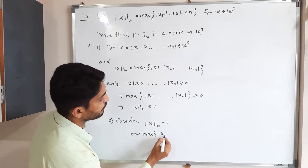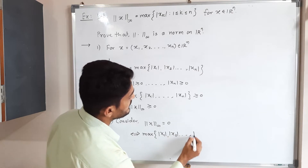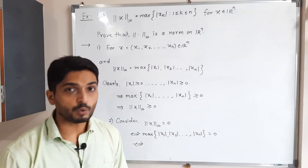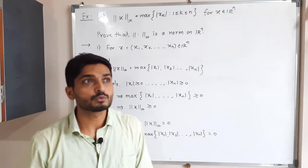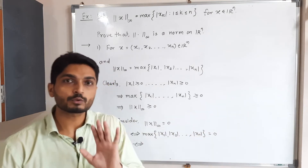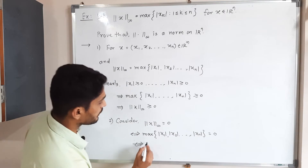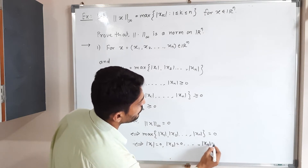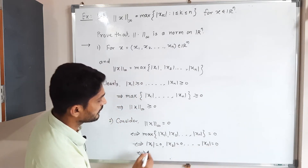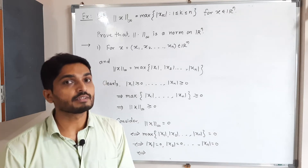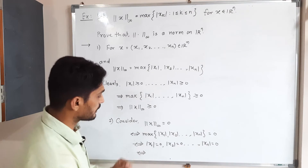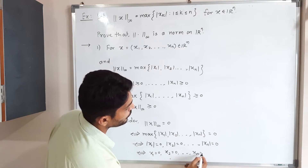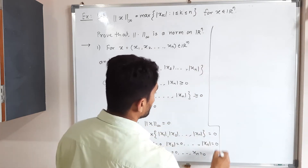By definition, ‖x‖∞ = 0 means max(|x₁|, |x₂|, ..., |xₙ|) = 0. Since none of them is negative, if the maximum is 0 then all of them must be 0. So |x₁| = 0, |x₂| = 0, ..., |xₙ| = 0, which happens if and only if each xᵢ = 0.